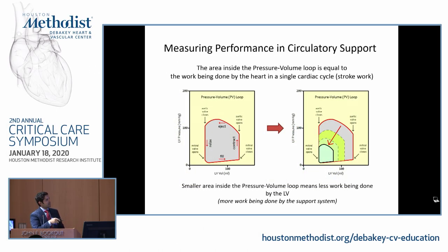The difference between the two areas in the contraction is the stroke volume. The purpose of using mechanical circulatory support is to decrease the area under the curve, so the heart does less work and more work is done by the mechanical circulatory support device.